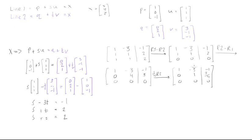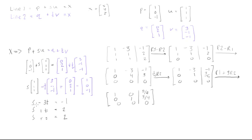The last step to get reduced row echelon form is to eliminate the -3 in row one. We compute r1 plus 3 times r2, giving [1, 0 | 5/4]. So the matrix is now [1, 0 | 5/4], [0, 1 | 3/4], [0, 0 | 0]. The first column represents s and the second represents t, so s = 5/4 and t = 3/4.